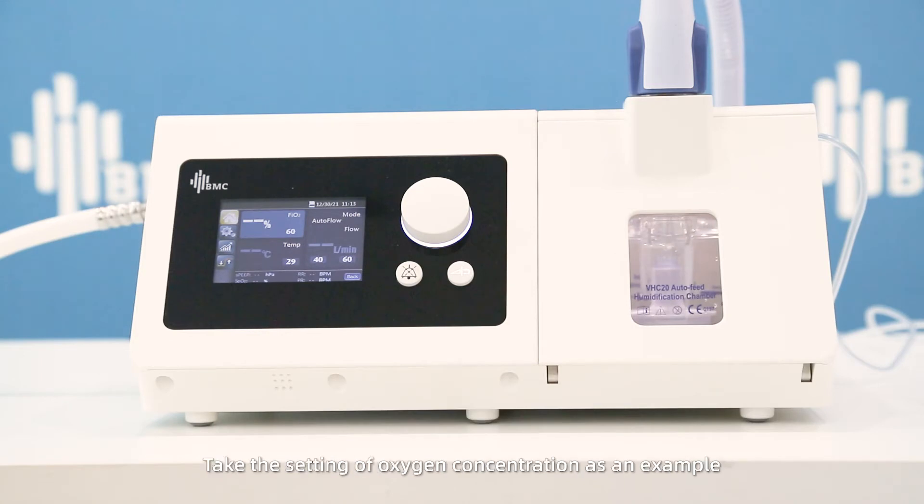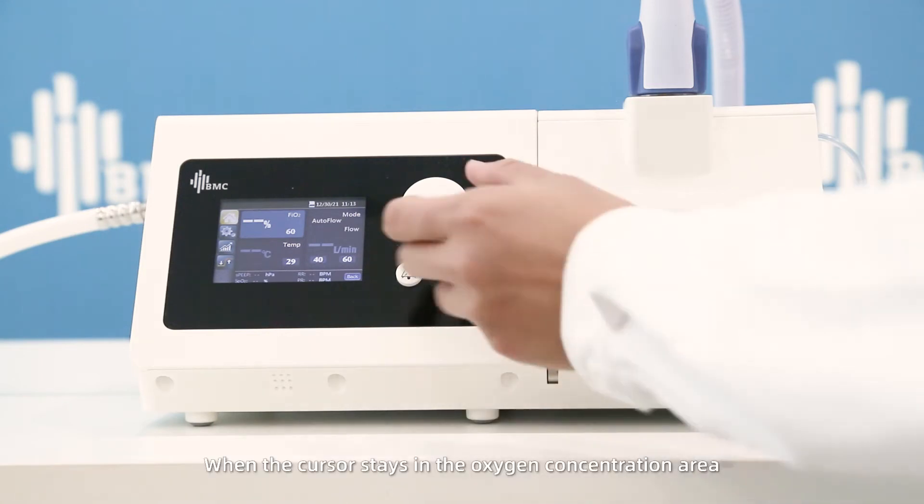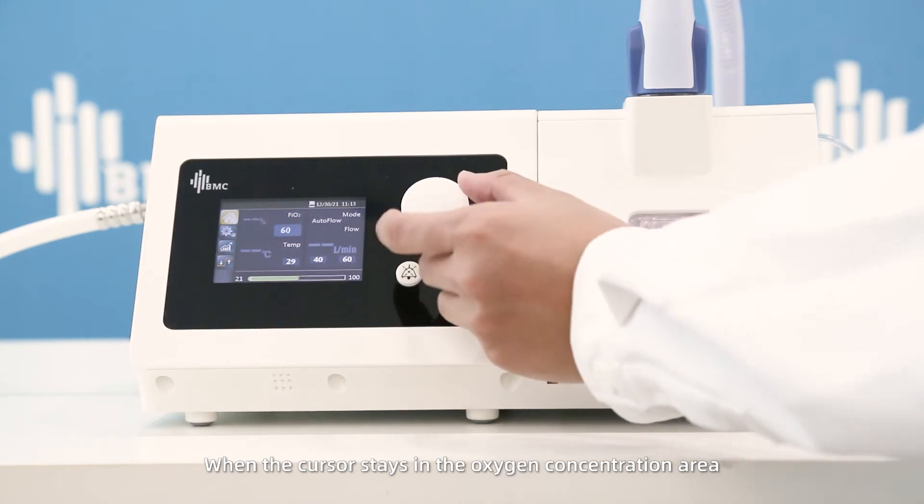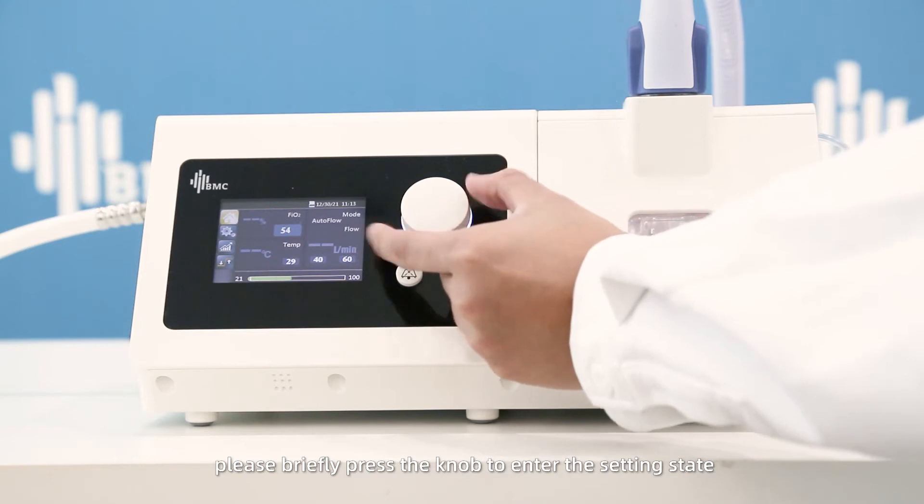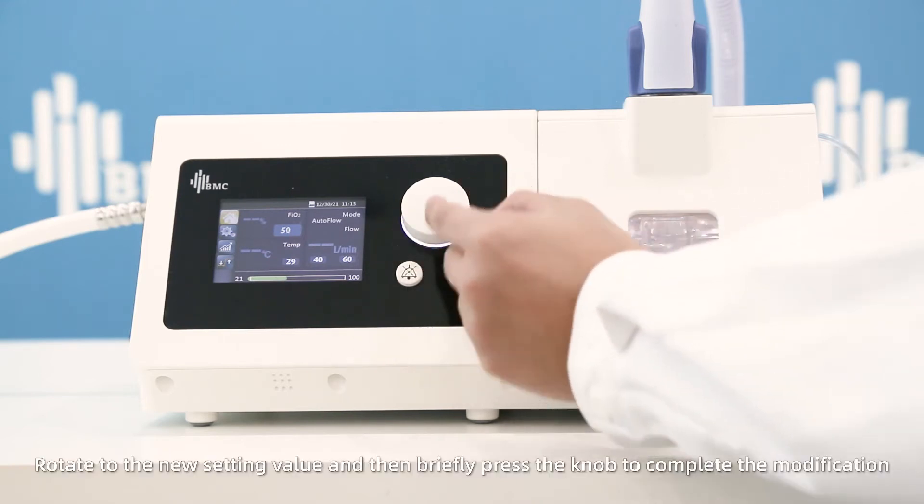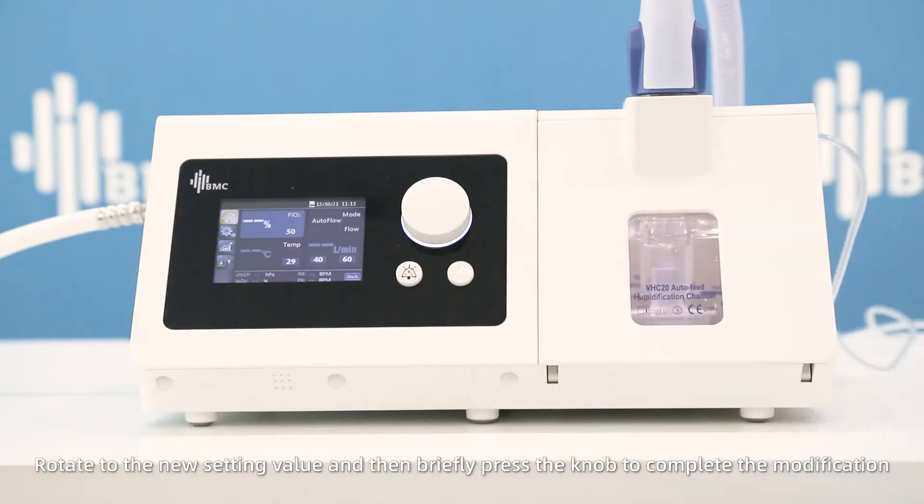Take the setting of oxygen concentration as an example. When the cursor stays in the oxygen concentration area, briefly press the knob to enter the setting state. Rotate to the new setting value and then briefly press the knob to complete the modification.